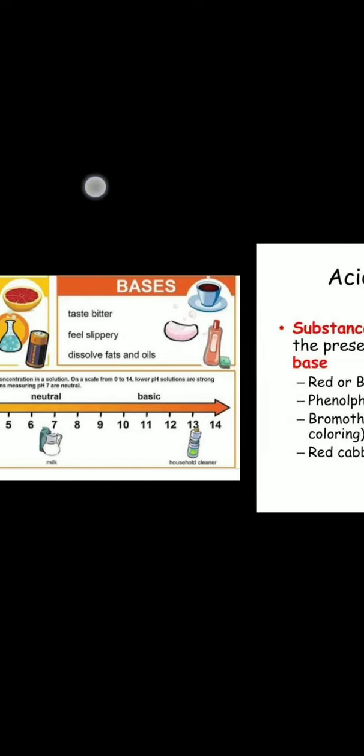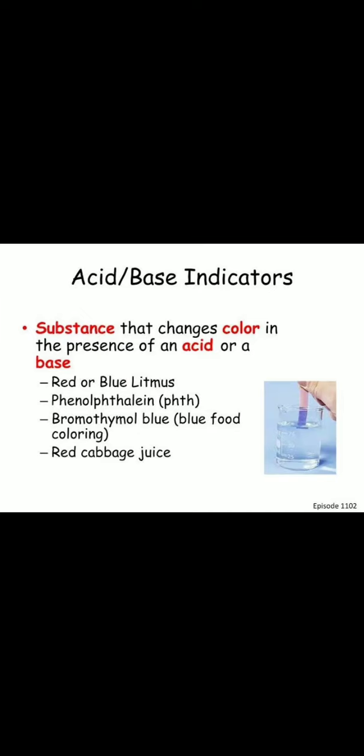Now we will discuss an important topic: acid-base indicators. These are substances that change color in the presence of an acid or a base. Examples include red or blue litmus, phenolphthalein, bromothymol blue, and red cabbage juice.